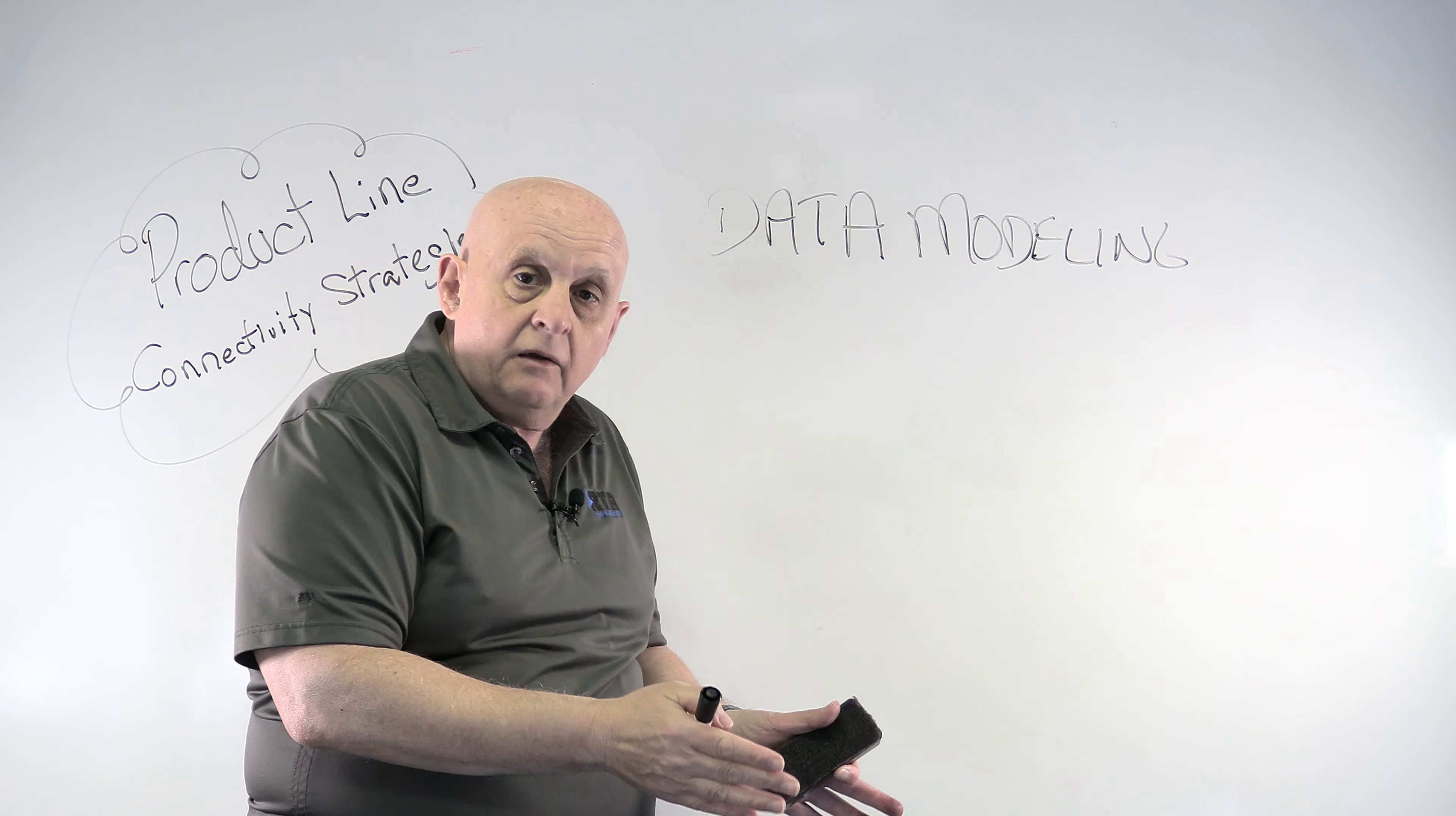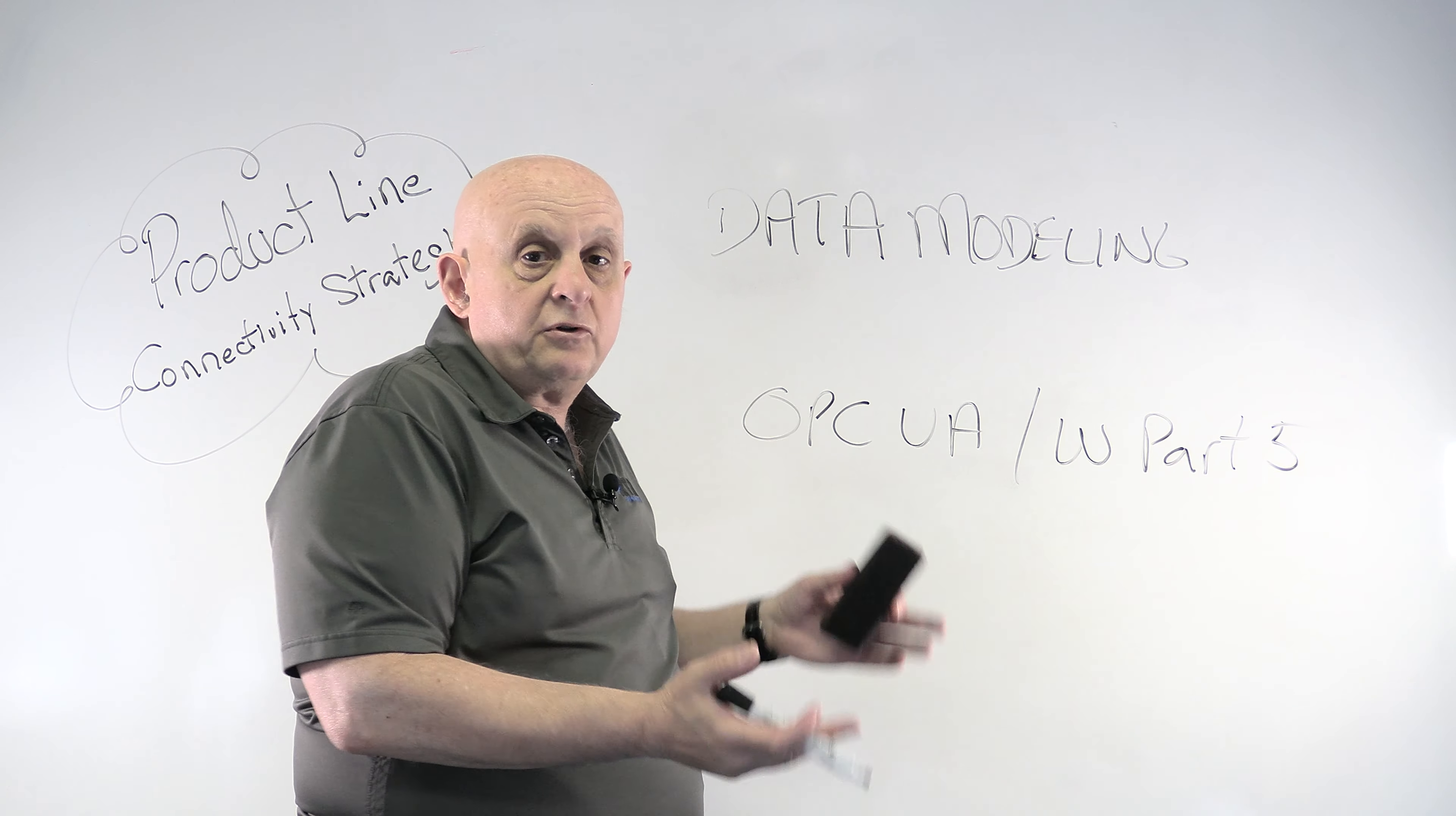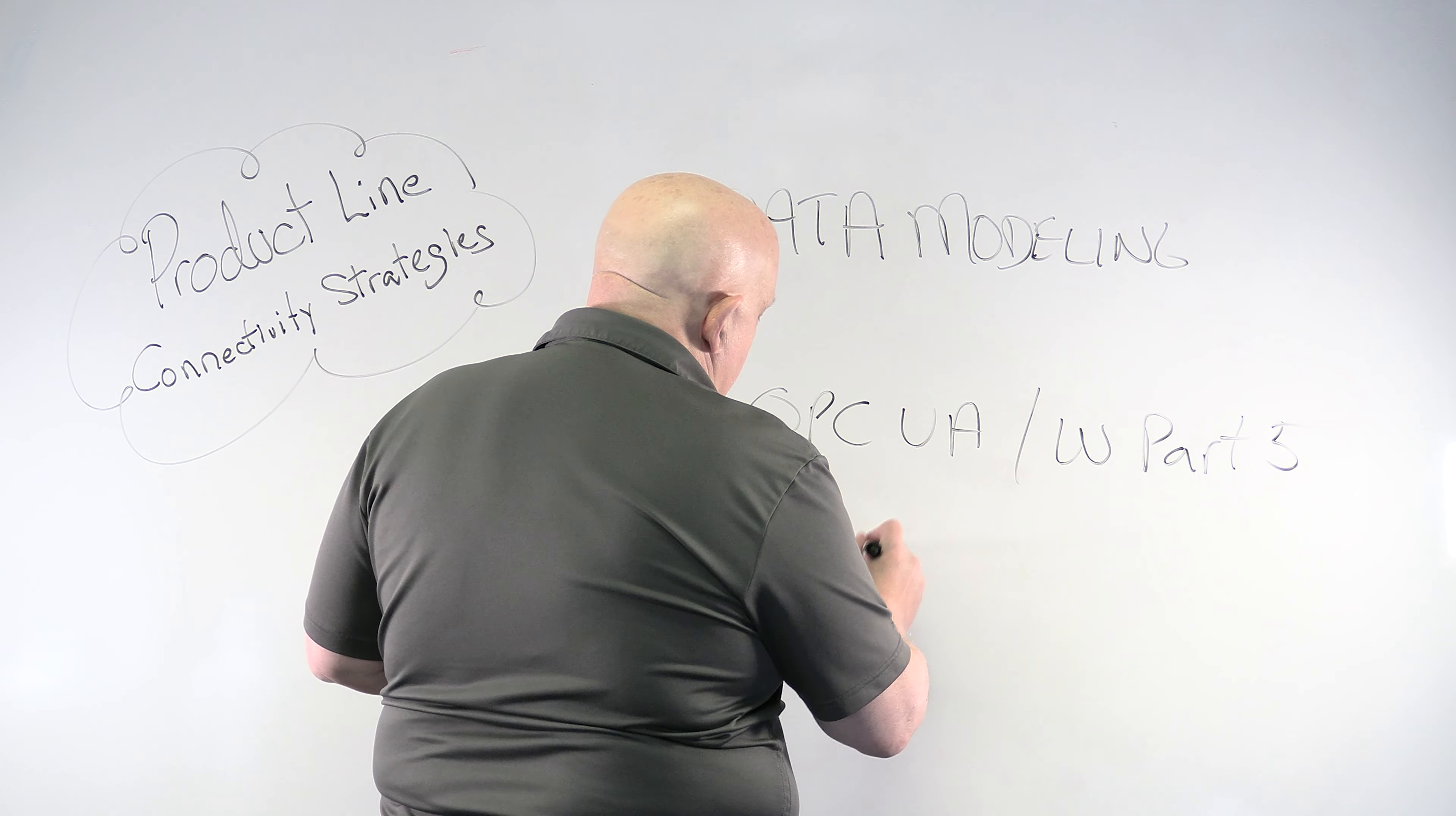The only industry standard I know that I would encourage people to support today, OPC UA, might change later, is OPC UA with the Part 5 data model. If you have a Part 5 data, if you support OPC UA with the Part 5 data model, then you're going to be good and lots of applications will be able to talk to you and be able to get your data. If you don't know what OPC UA Part 5 is, you might want to get one of my books. You might want to call us and talk to us about how you can get connected in this industry standard way.